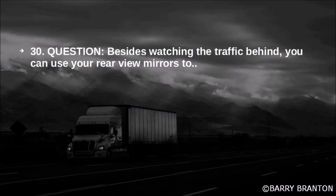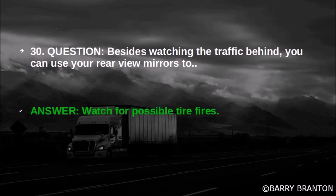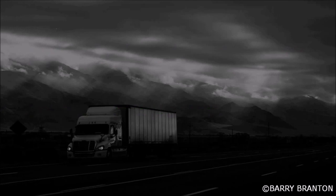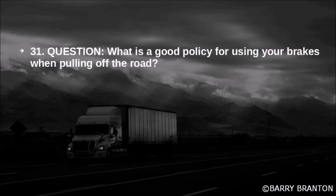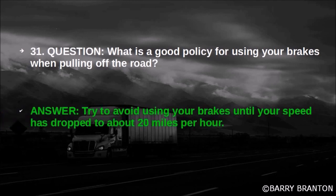Besides watching the traffic behind you, you can use your rear view mirrors to watch for possible tire fires. What is a good policy for using your brakes when pulling off the road? Try to avoid using your brakes until your speed has dropped to about 20 miles per hour.